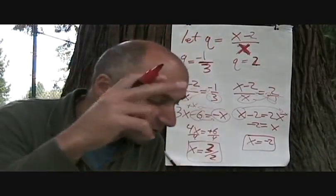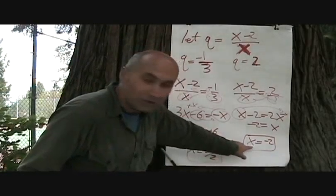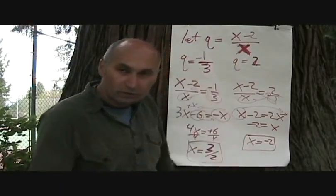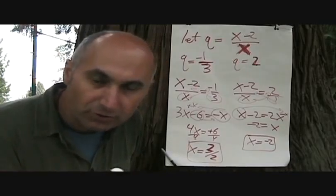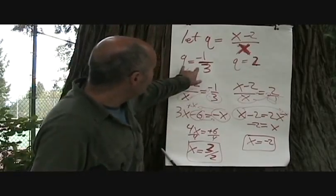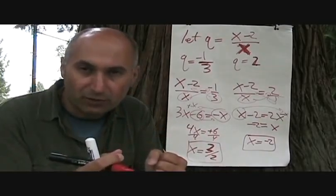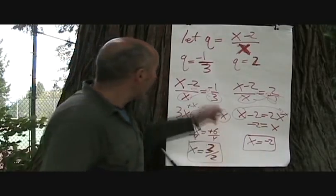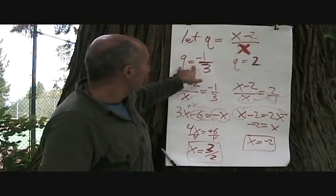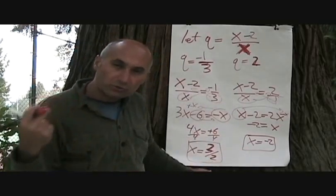Our original question was asking us to solve for X, not Q. Q was something introduced into the process to make the expression simpler to solve. We used the let statement to simplify things, worked through it, and then resubstituted whatever our let statement was back in for Q and solved for the X values to get our answers to the original question.